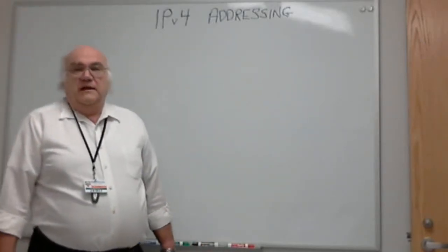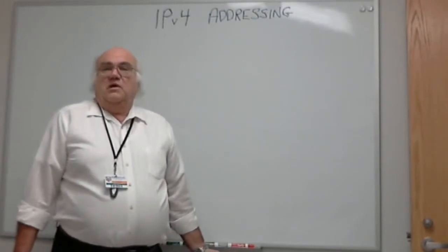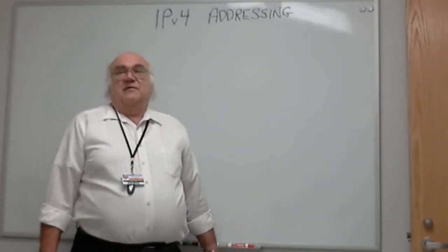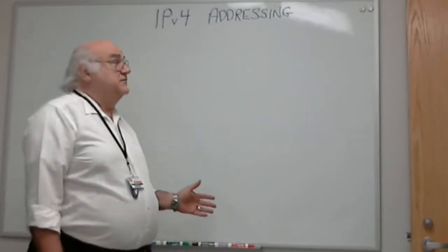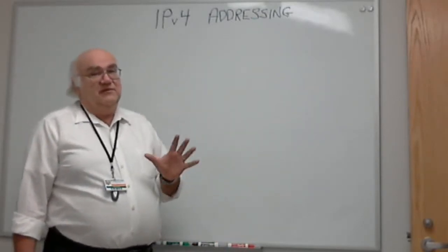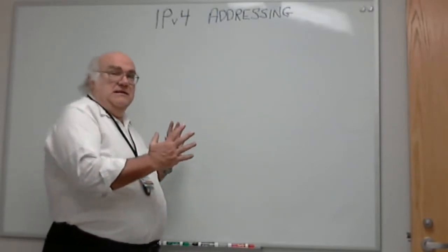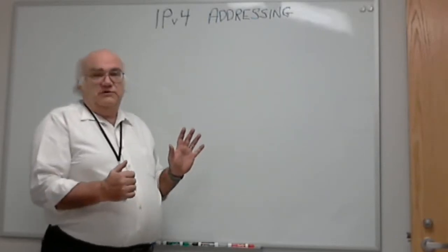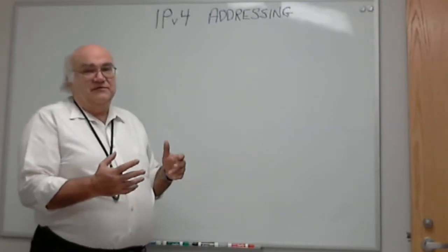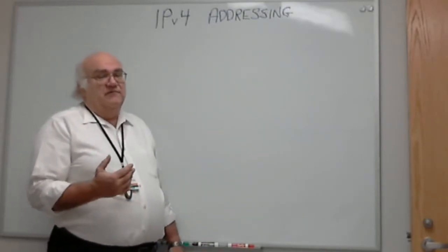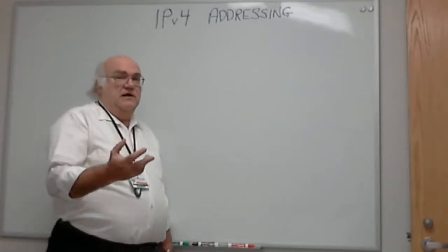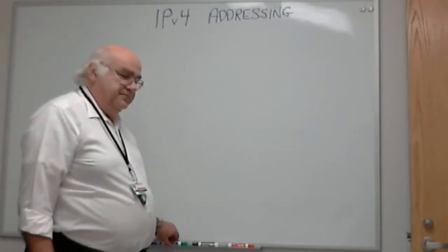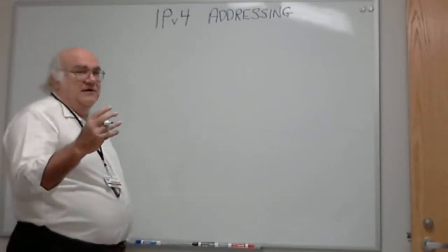We've learned a little bit about networking and how the internet works. Every host has to have a unique address. We've learned about classful addressing and classless addressing. With classful addressing, there were three classes — A, B, and C — with a certain number of bits corresponding to the network portion and the host portion. Converting those bits into dotted decimal is a skill. You need to review converting binary to decimal and decimal back to binary.